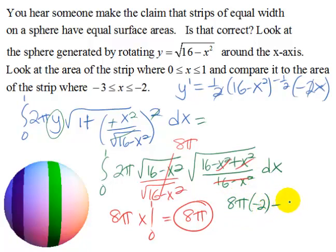Basically if we had 8π and we put in negative 2 here, then 8π and we put in negative 3 here, because we have this 8π and we have the difference here of 1, we're still going to get 8π. And that's going to be true as long as we have the same width, so this claim is true.